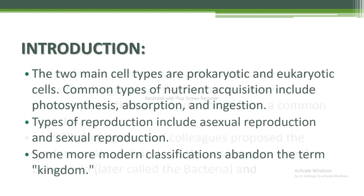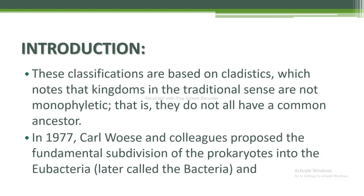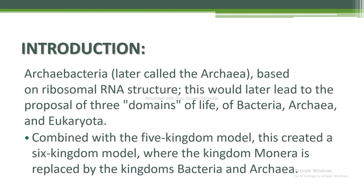Types of reproduction include asexual and sexual reproduction. Some modern classifications abandon the term kingdom. These classifications are based on cladistics, which notes that kingdoms in the traditional sense are not monophyletic — that is, they do not all have a common ancestor. In 1977, Carl Woese and colleagues proposed the fundamental subdivision of the prokaryotes into the eubacteria, later called Bacteria, and the archaebacteria, later called Archaea, based on ribosomal RNA structure. This would later lead to the proposal of three domains of life: Bacteria, Archaea, and Eukaryota.